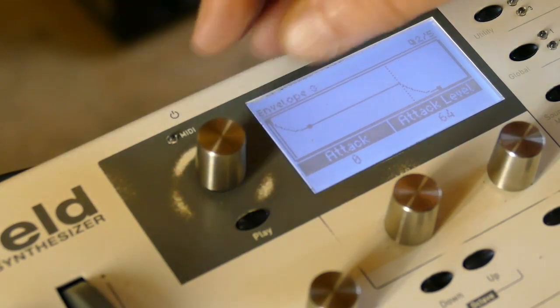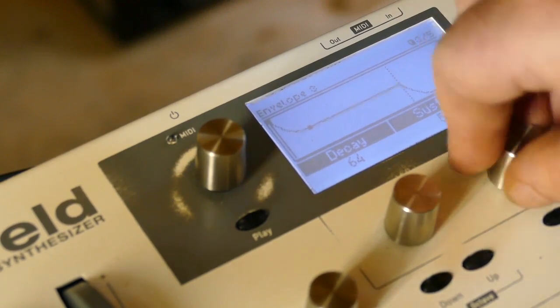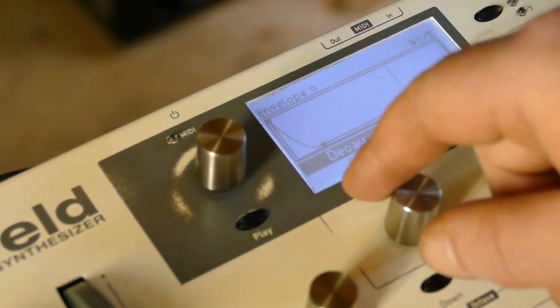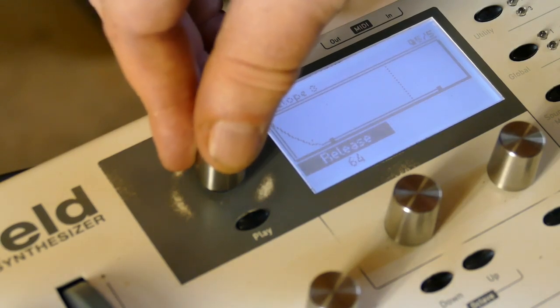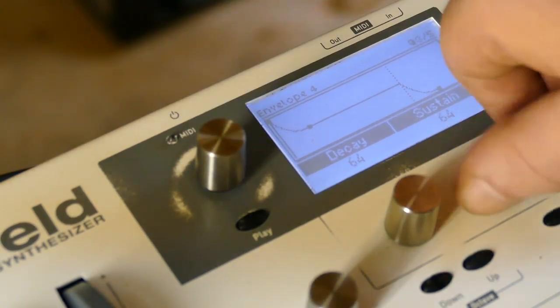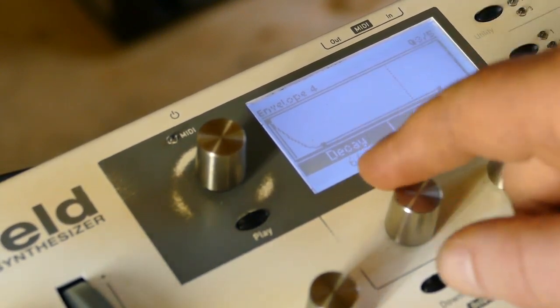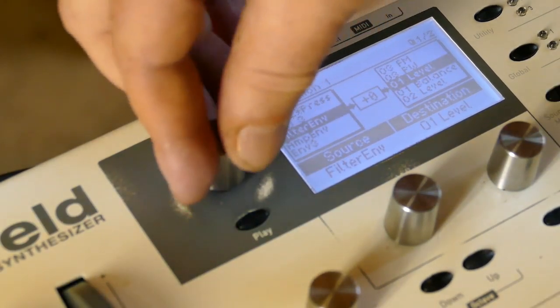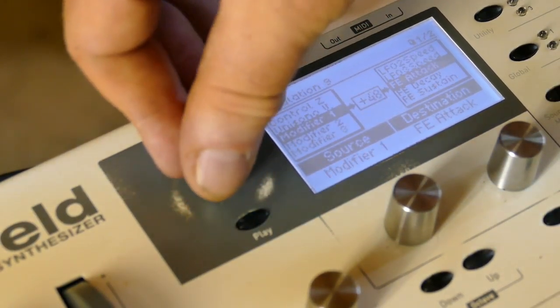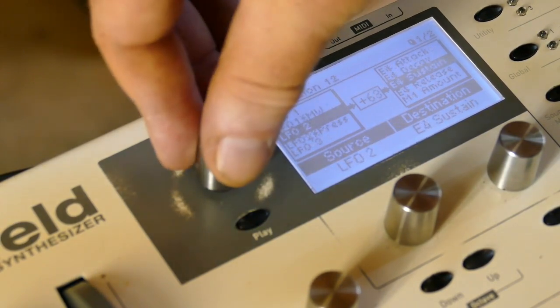So envelope 3, take the sustain down to 0. Good lag, say about there. This is all randomized because that's what you're looking for is random, it's not scientific. Sustain, move the decay to about whatever there. Sure, that's fine. Let's start bringing this in. First we're bringing in excessive amounts, and then we'll chill it down to something more usable.